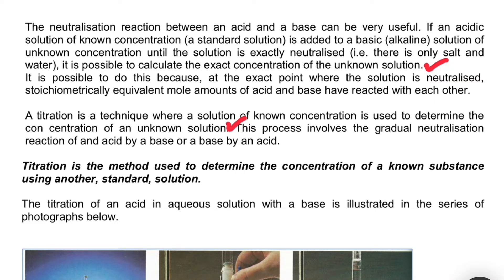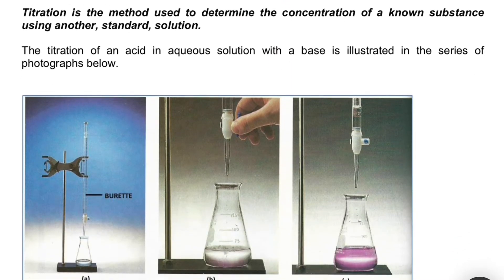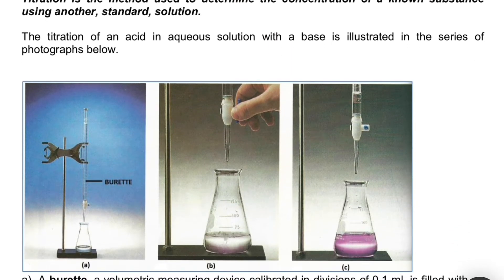This process involves the gradual neutralization reaction of an acid by a base, or of a base by an acid. If you're given an acid with known properties, you can find the properties of an unknown base. If you're given the properties of a base, you can find the properties of an unknown acid. Titration is a method used to determine the concentration of an unknown substance using a standard solution — a solution of known concentration.